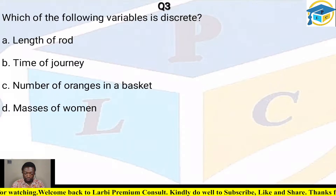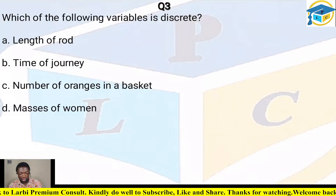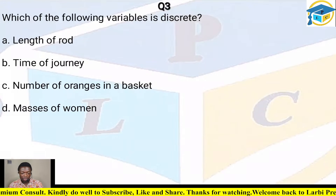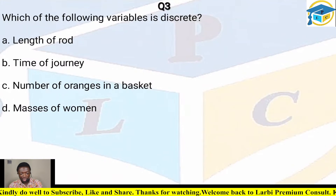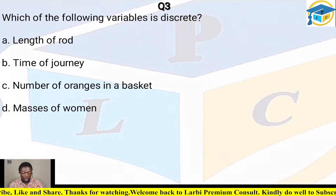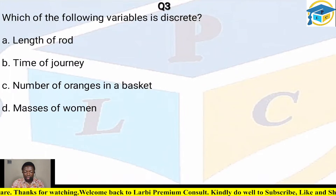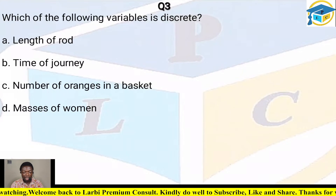Question three: which of the following variables is discrete? Options: A) length of a road, B) time of journey, C) number of oranges in the basket, D) masses of women. Discrete data is data which can be counted, so the correct answer is C — number of oranges in the basket.